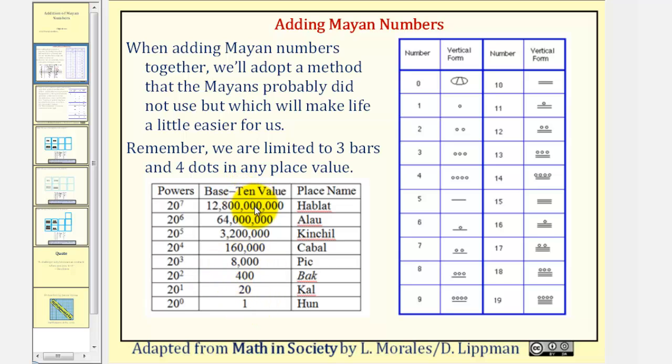Because we have a base 20 system, we need symbols for zero through 19 given here in the table. Notice how a dot is equal to one and a horizontal bar is equal to five. We also have this special symbol here for zero.